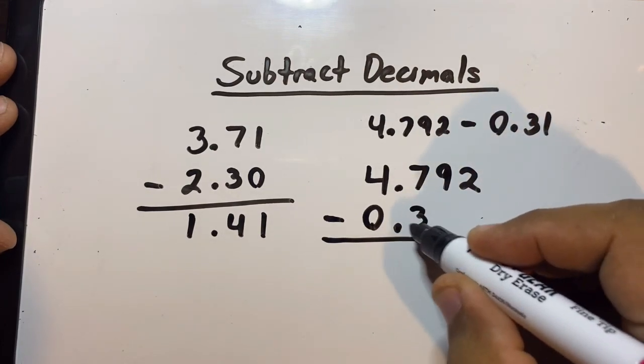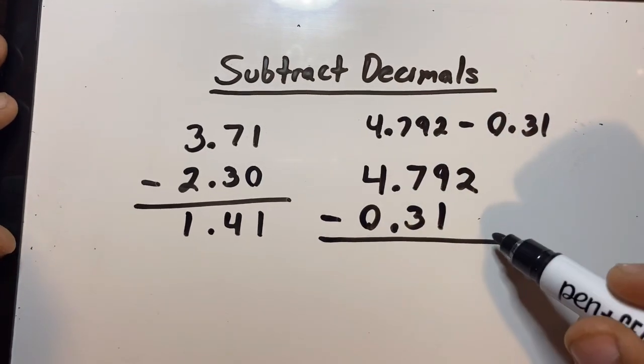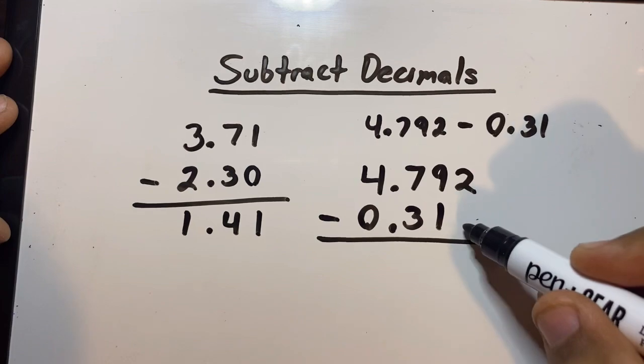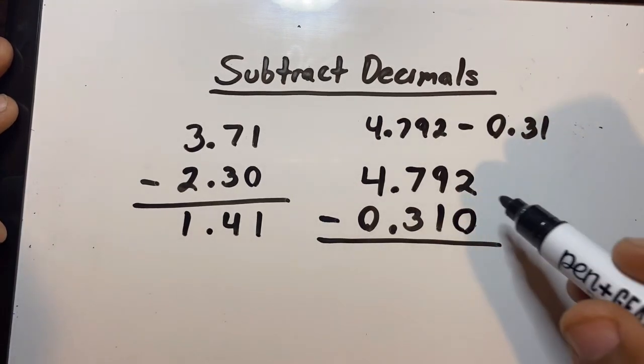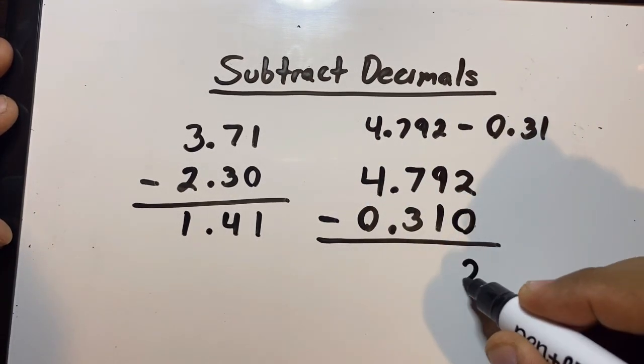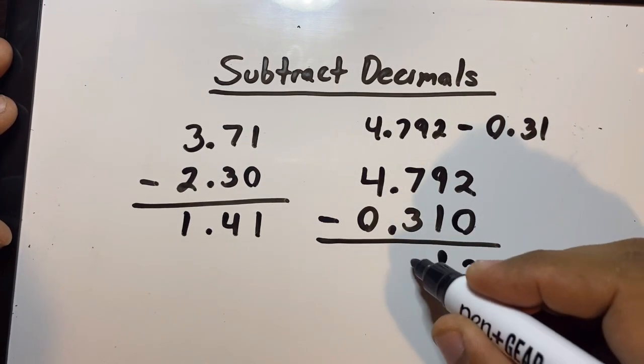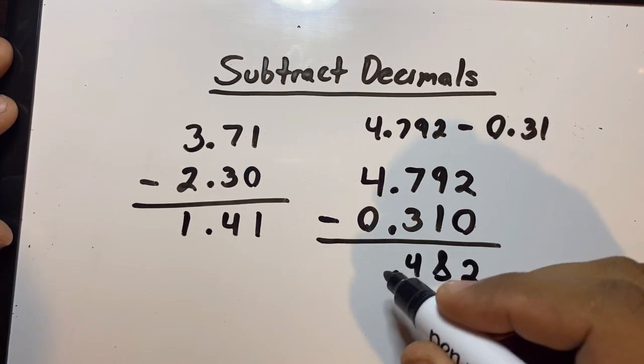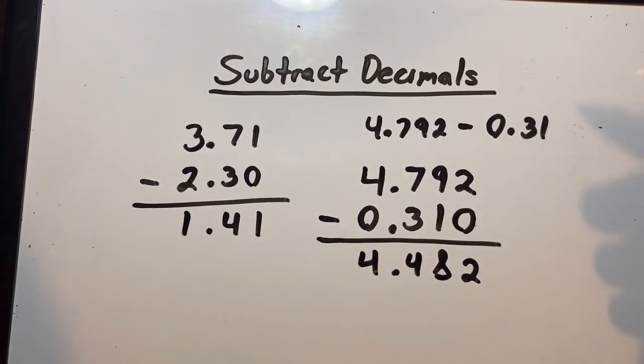And again, if you have an empty space here, you can add a 0. 2 minus 0 is 2, 9 minus 1 is 8, 7 minus 3 is 4, and then 4 minus 0 is 4. See, it's not that hard kiddos, I promise you.